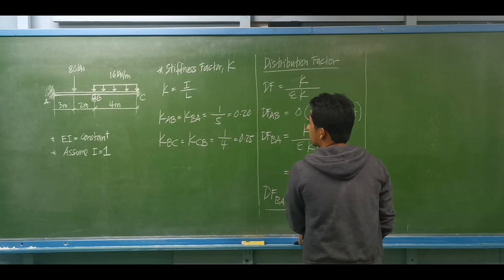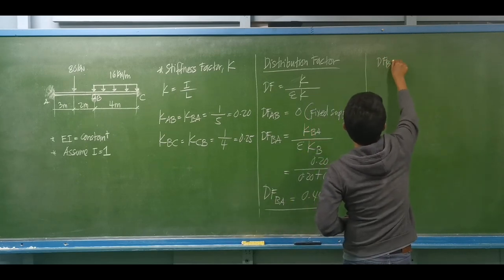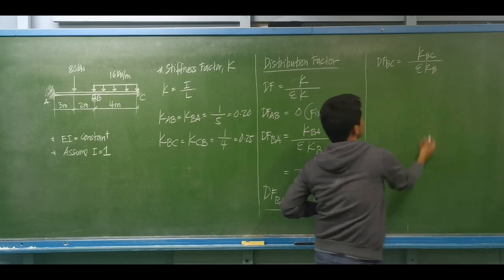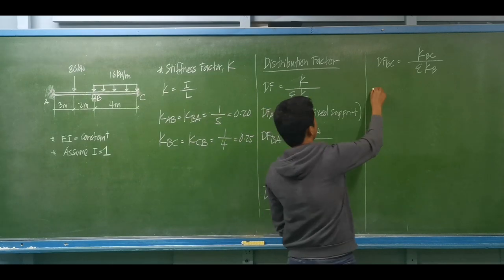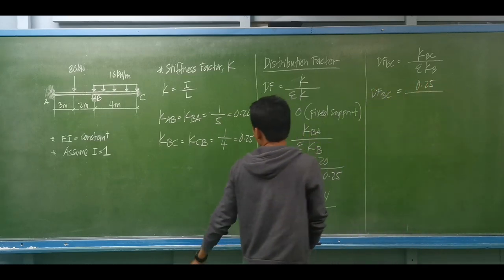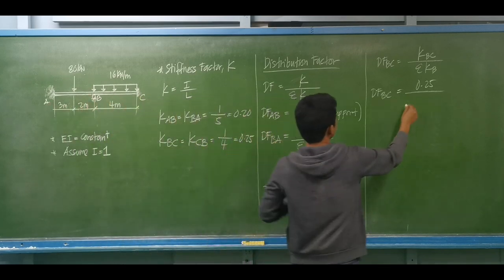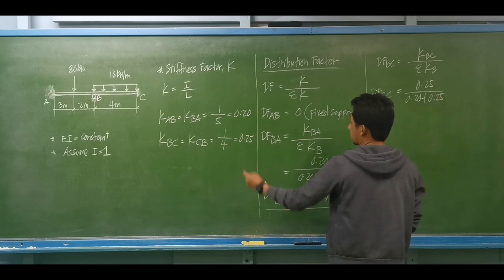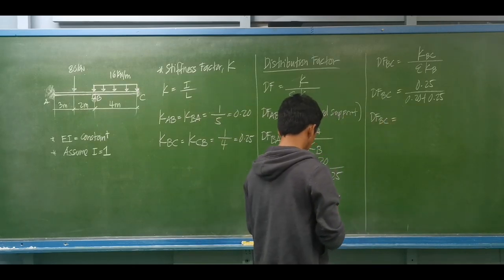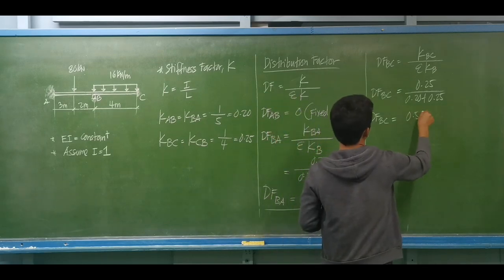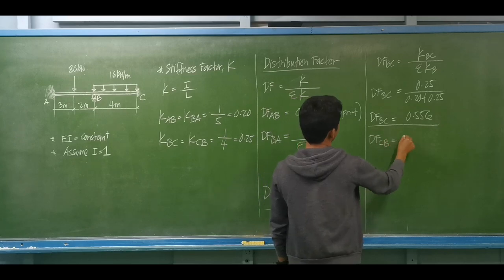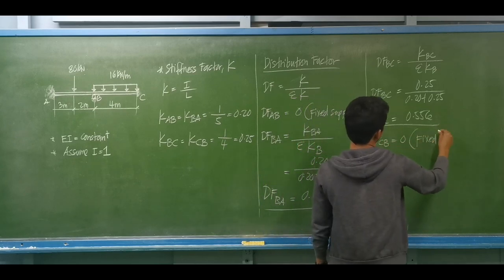For the distribution factor for member BC, this equals 0.25 divided by the summation of stiffness factors connected to joint B — BA (0.20) and BC (0.25) — giving 0.556. The distribution factor for member CB is 0 since it is a fixed support.